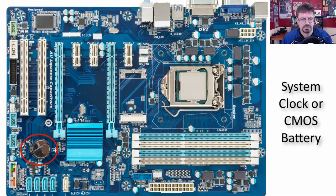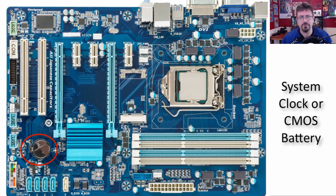Over here is the system clock battery, or CMOS battery — yes, it's a watch battery. These things can go bad, but it takes a couple of years for that to happen. Usually your computer has other issues before you ever have to replace that battery.